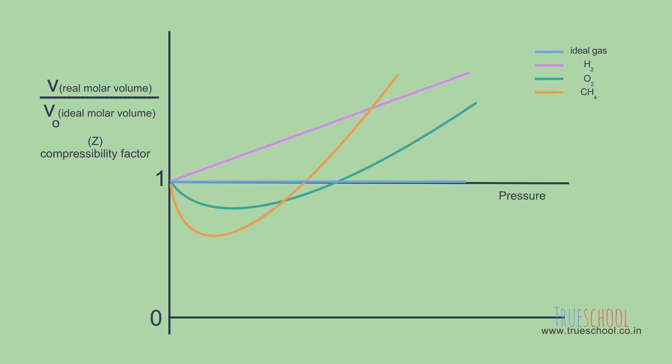Notice that H2 does not show Z less than 1 because it has almost no attractive forces between its particles.